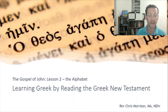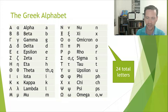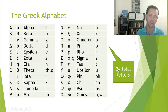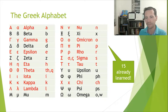Let's go ahead and get into the actual alphabet and learn all of the letters. Last time we learned the letters kind of hodgepodge. This is the actual alphabet in proper order — the Greek alphabet. There are 24 letters total.